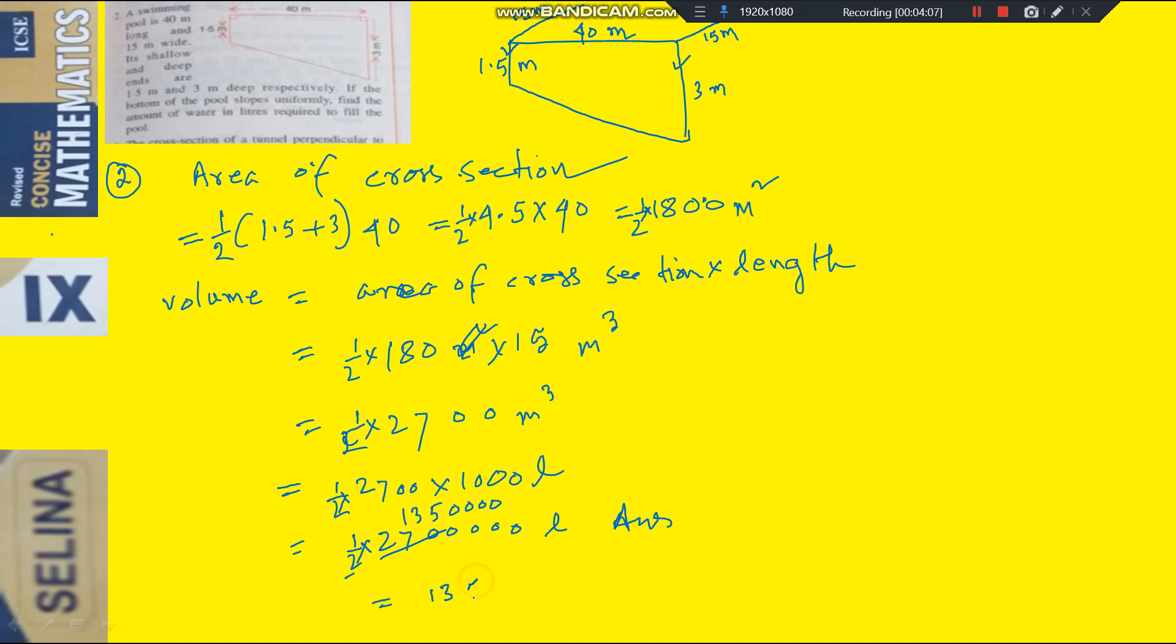This liter is the answer. 1,3,5,0 is the answer. So, remember area of cross section, that area of trapezium, half into sum of parallel sides into distance between them. I forgot that half. That's all.